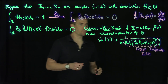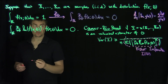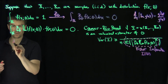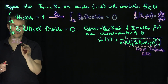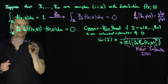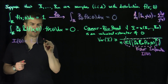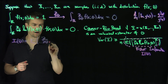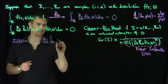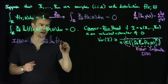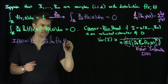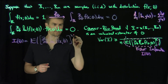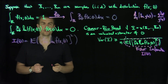So if we want to compute the Fisher information, we need to compute i of theta as the expected value of the square of the theta derivative of the log of f of x and theta.